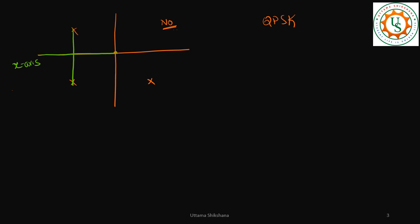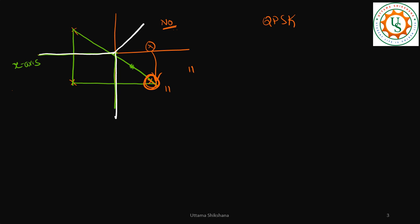For the remaining pair of points, you need to draw a perpendicular bisector to the line connecting them. So the decision boundary would look something like this. If there is a received sample lying at a certain point, you check which region it is nearest to and decode accordingly — for example, if it's nearest to the point labeled '11', you decode it as 11.